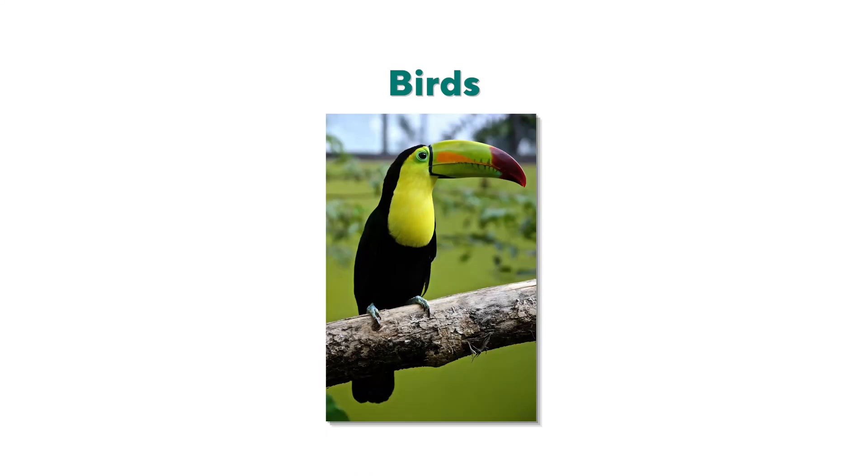Not all animals reproduce the same way. Some lay eggs while some give birth to their babies. Can you think of some egg-laying animals? Yes, birds! Other than birds, there are animals like frogs, turtles, snakes, and insects that lay eggs. The babies grow inside the eggs, then they hatch out, grow some more, and become adult animals. These different stages of development form what is called the life cycle of that animal.